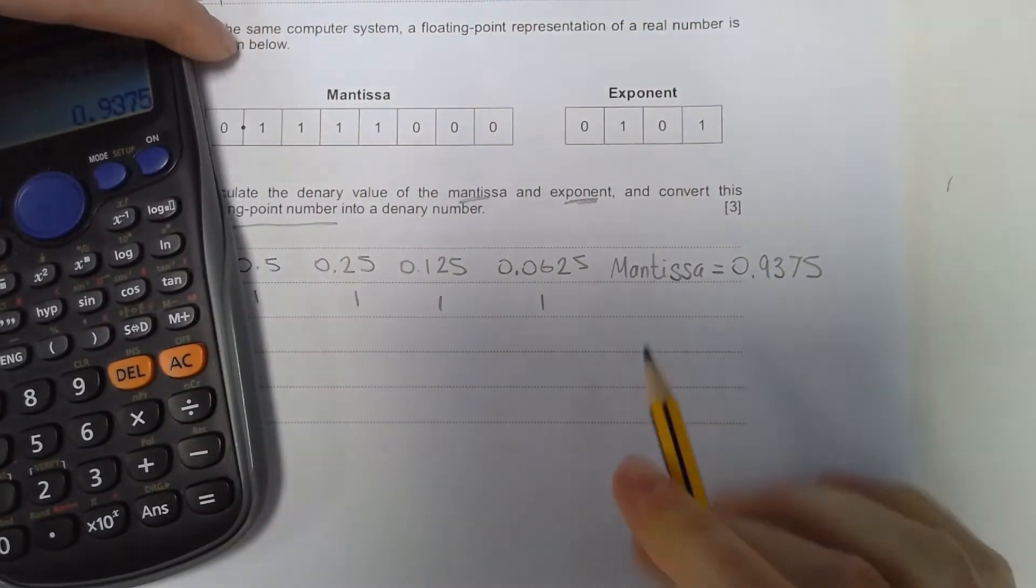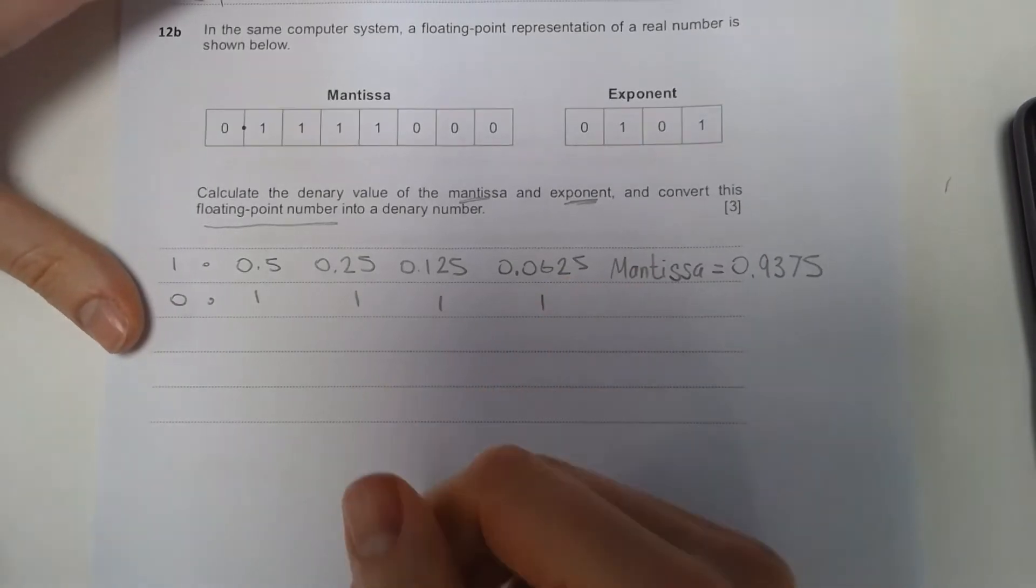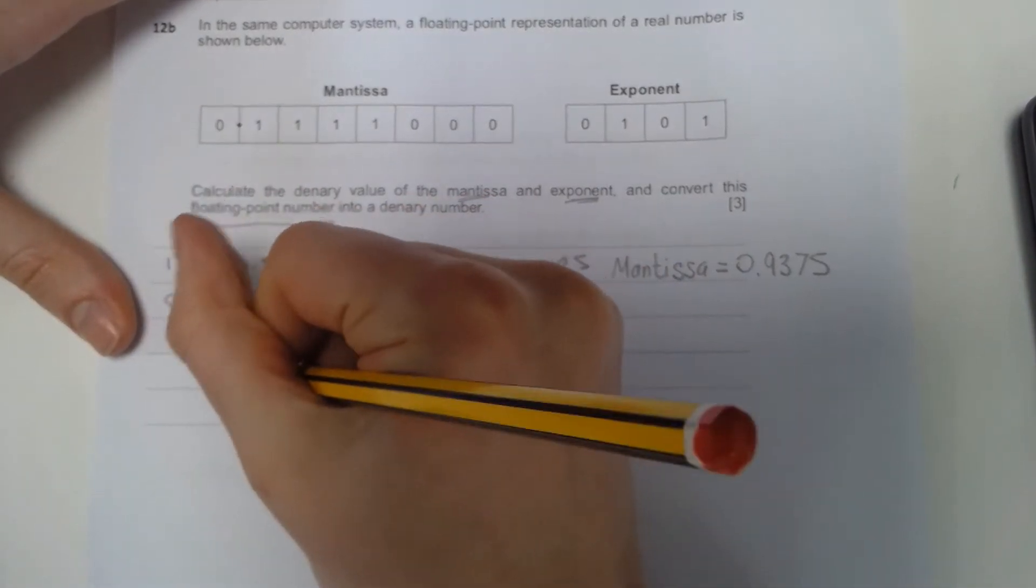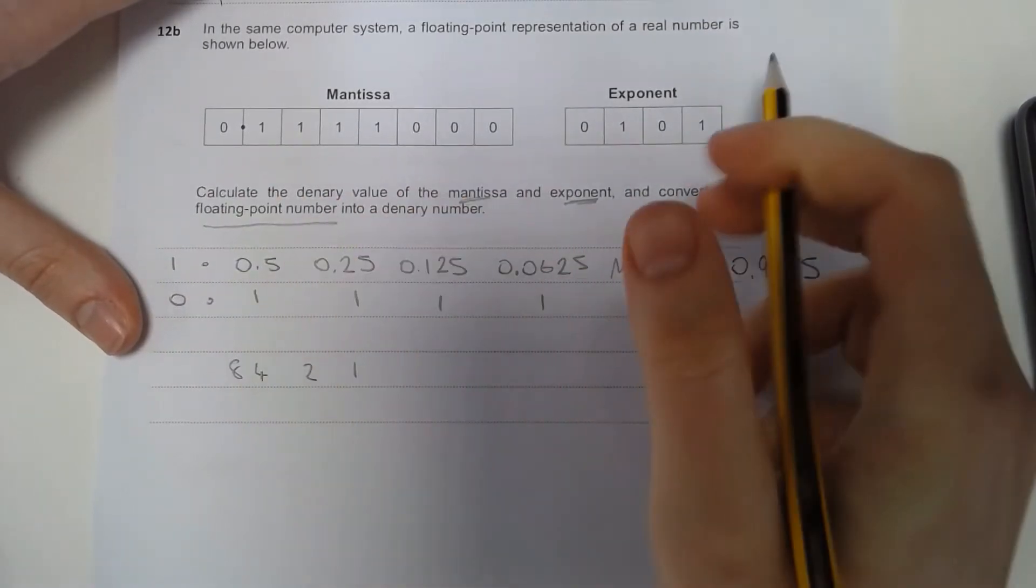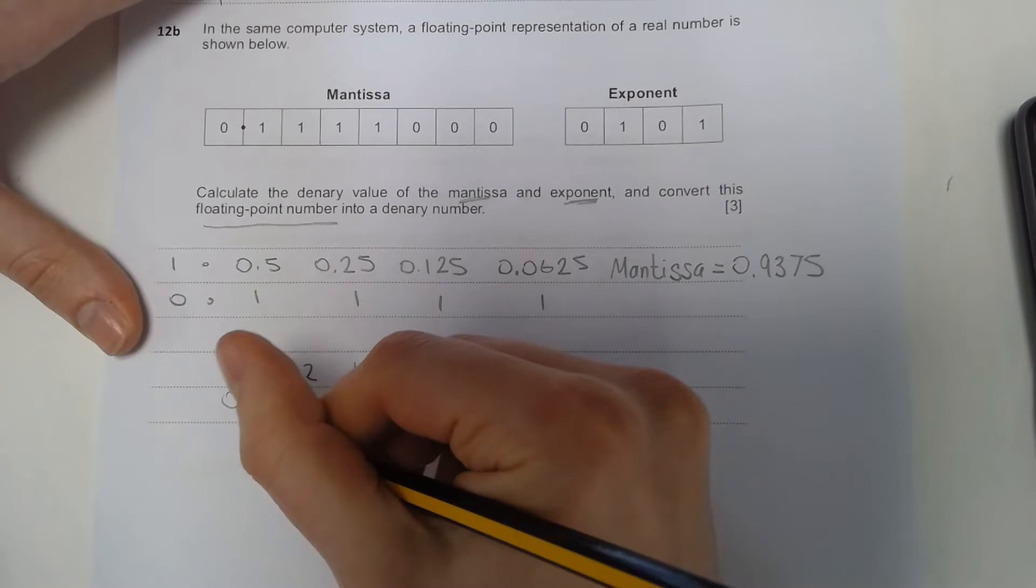The next thing it's asking us to do is our exponent. For our exponent, we have the value up above, but we'll just write it down to get the mark. So, 1, 2, 4, 8. I'm going to go 1, 0, 1, 0. Our answer is 5.